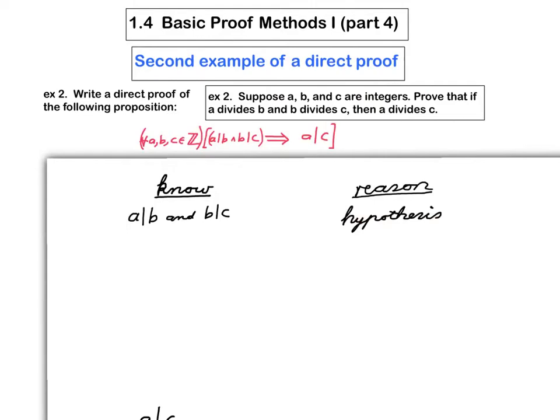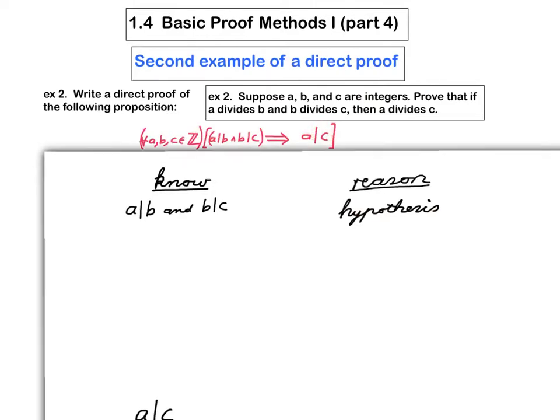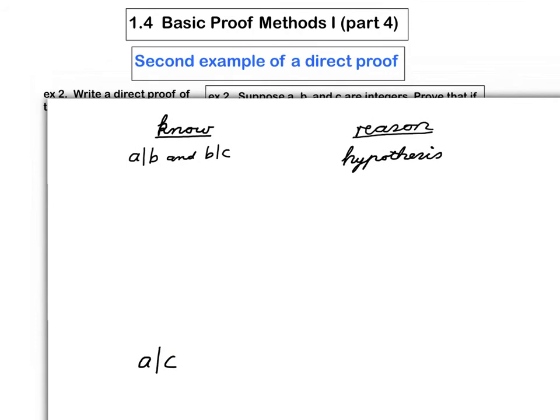The last line of the table is the conclusion. So you can see that I've put that down here. And at this point, I don't really know why I'm going to be able to assert that, so I have to leave that blank.